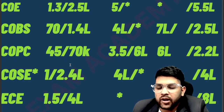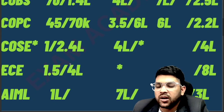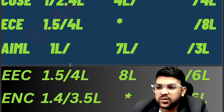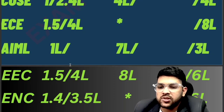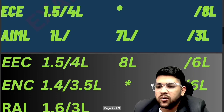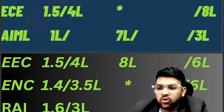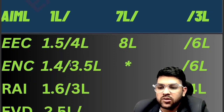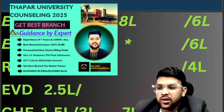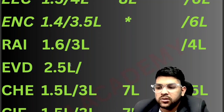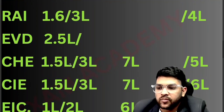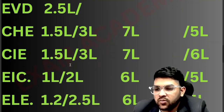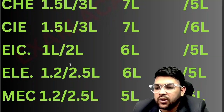For COSC (Dera Bassi campus CSE): 1 lakh and 2.4 lakh for General; SC 4 lakh. For EC: 1.5 lakh and 4 lakh for General; BC 8 lakh. For AIML: 1 lakh, 7 lakh, 3 lakh for General, SC, and BC. For EEC: 1.5 lakh and 4 lakh for General; SC 8 lakh; BC 6 lakh. For ENC: 1.4 lakh and 3.5 lakh for General (other state and home state); BC 6 lakh. For Robotics and AI: 1.6 lakh, 3 lakh, and 4 lakh. For EVD (Electronics and VLSI Design): 2.5 lakh for other state General.